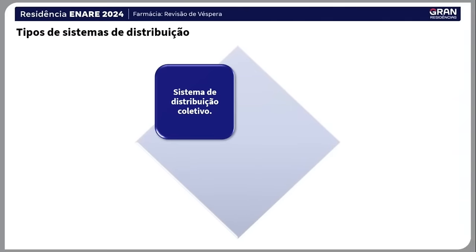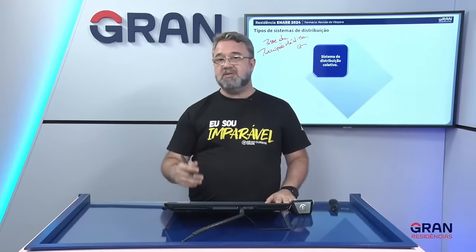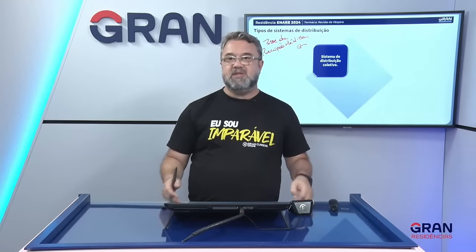Recordando os tipos de sistema de distribuição: o que diferencia o sistema de distribuição coletivo dos outros sistemas é a posse da prescrição médica. No sistema de dose coletivo, a prescrição médica está com a enfermagem. A enfermagem monta uma listagem com tudo que foi prescrito para cada leito e encaminha essa lista para a farmácia. O farmacêutico simplesmente pega a lista, separa os medicamentos e os coloca à disposição da enfermagem — sem saber para qual paciente foi, sem rastreabilidade, sem controle de perdas.